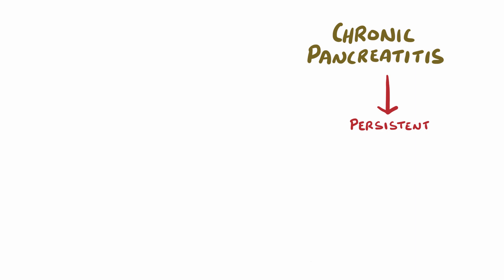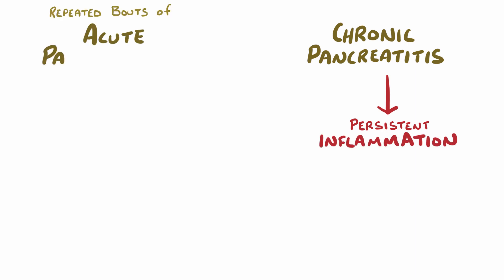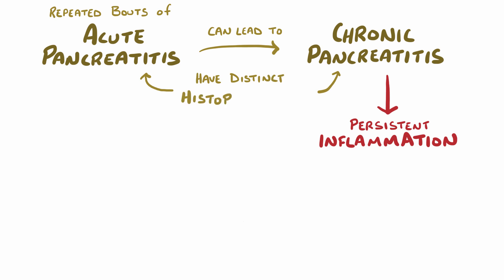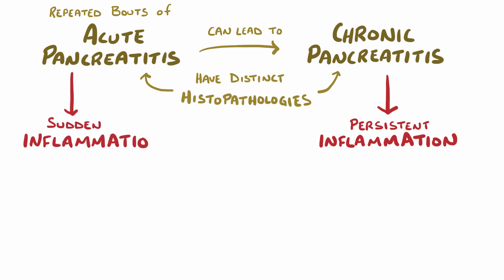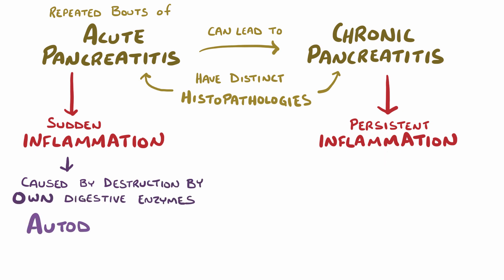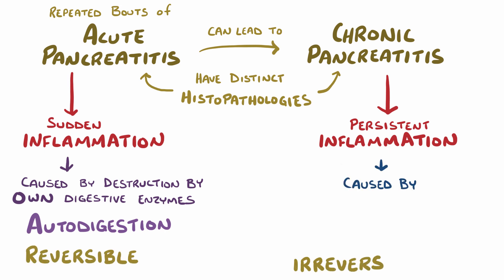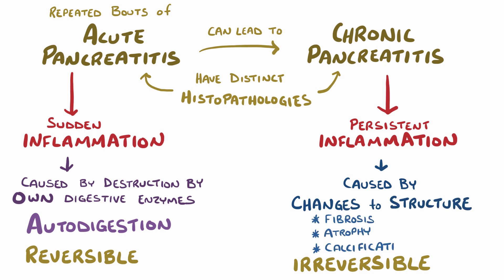Chronic pancreatitis is persistent, chronic inflammation of the pancreas, often due to repeated bouts of acute pancreatitis. While a history of acute pancreatitis might lead to chronic pancreatitis, these diseases have distinct histopathologies. Acute pancreatitis is inflammation caused by destruction of the pancreas by its own digestive enzymes—a process called autodigestion—and is generally reversible. Chronic pancreatitis is inflammation due to irreversible changes to the pancreatic structure, like fibrosis, atrophy, and calcification.